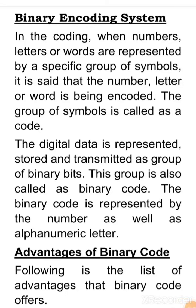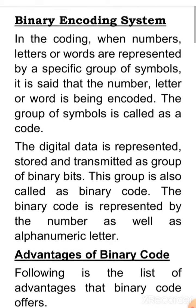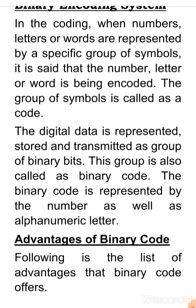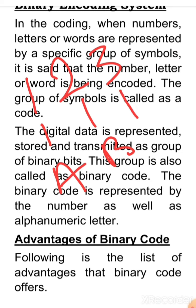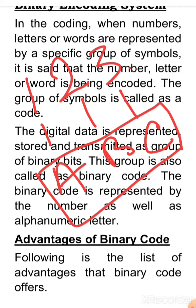Welcome students. In this video we are going to define what is binary encoding system in our digital computer system. In general, encoding means to convert any number, character, or anything into a specific format by some specific group of symbols. Encoding means changing one value — suppose we have a number 1, 2, 3. If we say 1 is represented by A, 2 is B, and 3 is C, then A, B, C is the encoded form of 1, 2, 3.